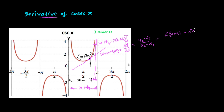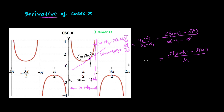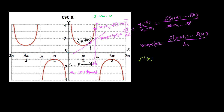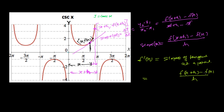So the slope is: y₂ minus y₁ divided by x₂ minus x₁. That gives us f(x+h) minus f(x), divided by (x+h) minus x. The x cancels, and we simply get f(x+h) minus f(x) divided by h. This is our slope, and the slope equals the derivative.